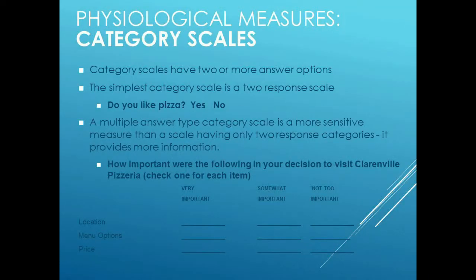The second psychological tool often used is the category scale. Category scales appear on questionnaires where people answer multiple choice questions. A multiple choice question can have as few as two possible answers — such as a true-false question — or more than two: four, five, six, or seven potential alternatives. As we move to a greater number of alternatives, we can put a finer point on exactly what someone wants.